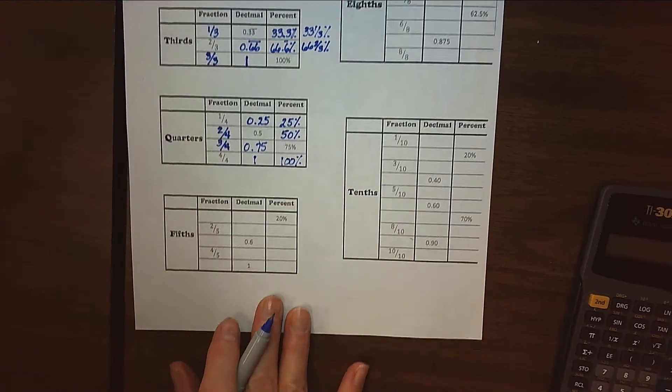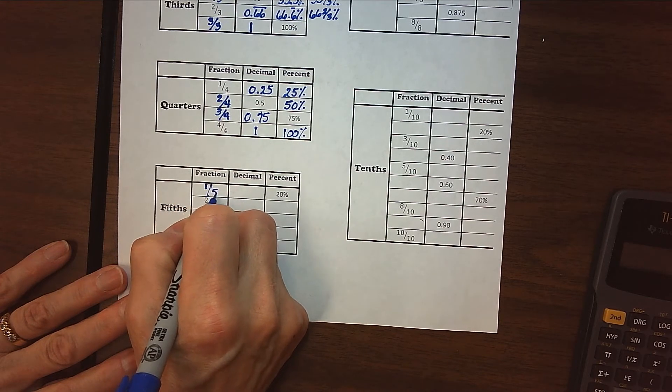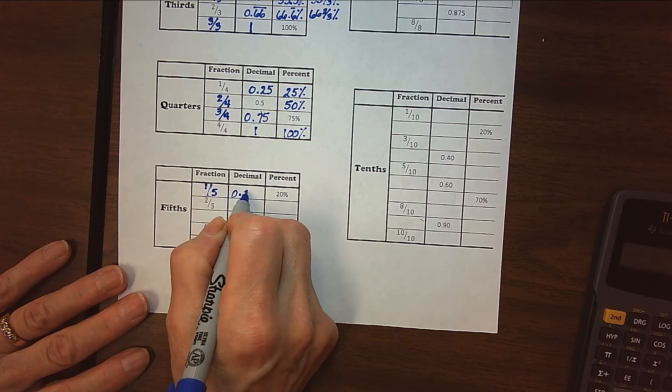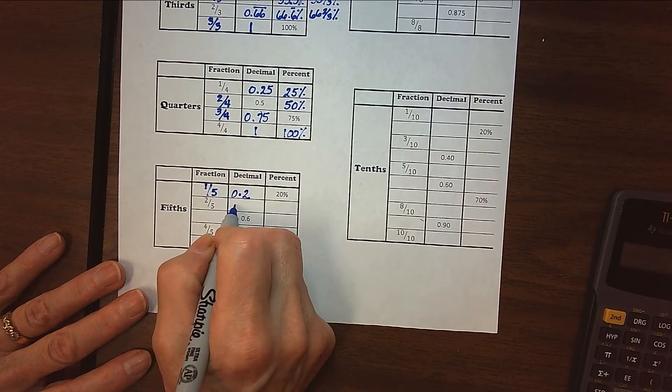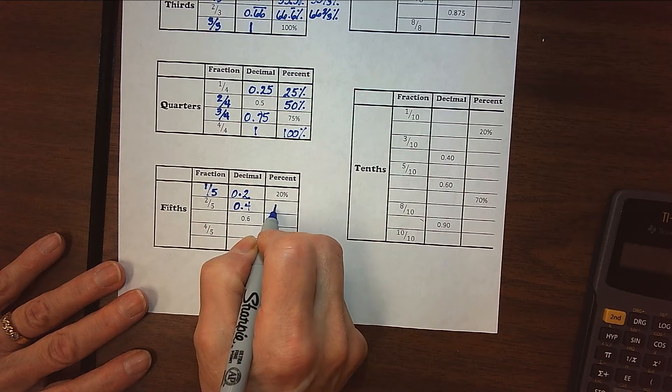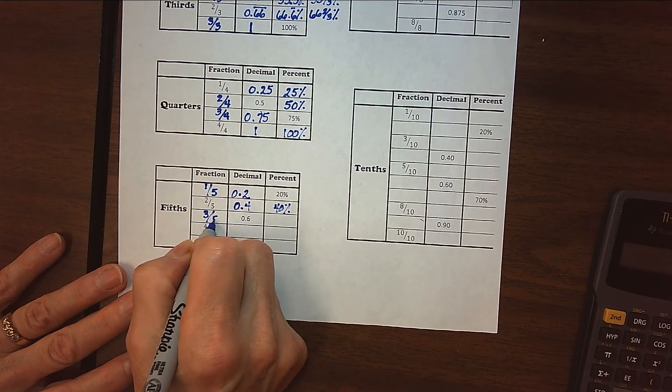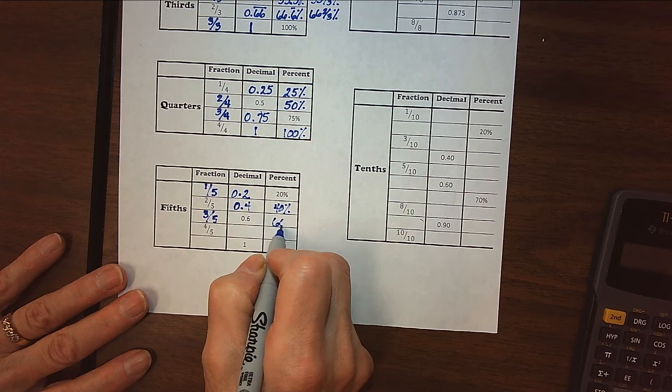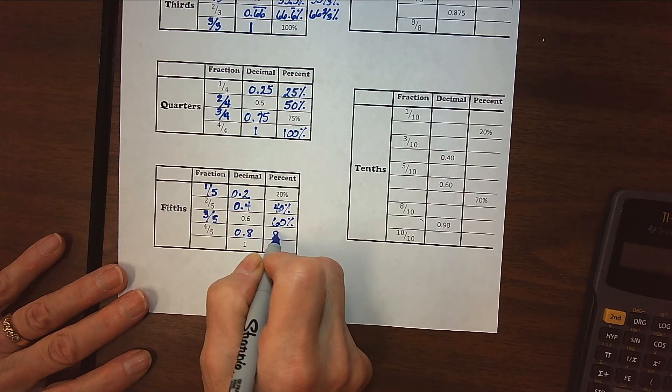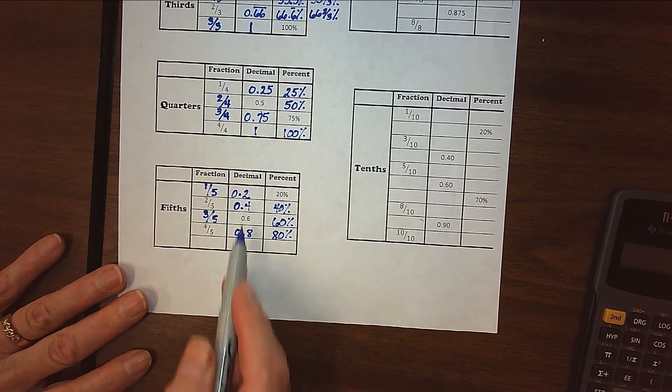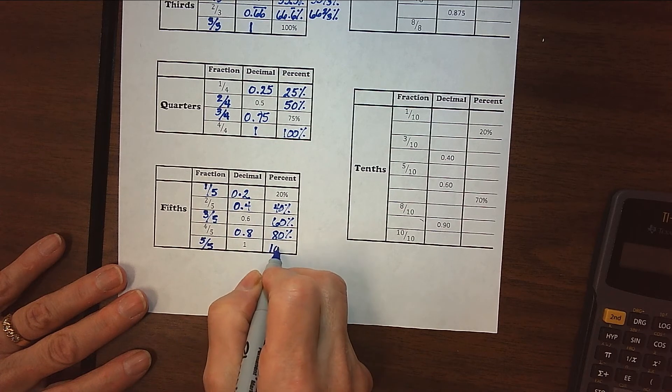All right, now the fifths. And the fifths you might be kind of familiar with as well. So one-fifth, again, if you think of one-fifth of a dollar, that's going to be 0.2 or 20 cents, 20%. Two-fifths of a dollar, double that, right? So 0.4 or 40%. Three-fifths, 0.6 or 60%. Four-fifths, 0.8 or 80%. You can see we're just going up by two each time, aren't we? And so five-fifths would equal one, which is our 100%.